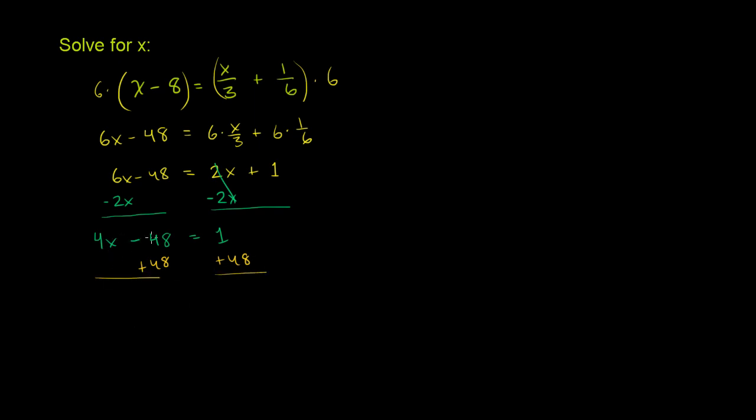And on the left-hand side, 4x minus 48 plus 48. Those cancel out. I'm left with just a 4x. And on the right-hand side, 1 plus 48 is going to be 49.